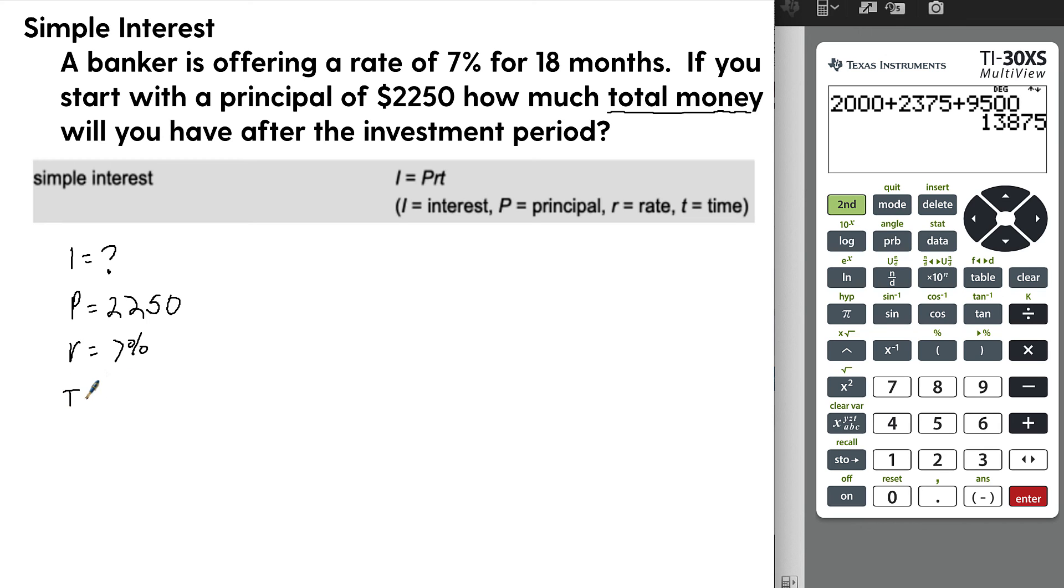Now we have everything we need. I equals the principal, which is 2,250, times the rate, which is 7%, times the time, which is 1.5. Let's put that all in the calculator. 2,250 times 7, and then second to get this percent, times 1.5. So over the course of a year and a half, the bank would pay you, if they were paying such a high rate, $236.25.